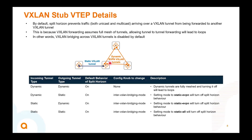There is a knob to change that, applicable only between static and dynamic tunnels. Dynamic to dynamic cannot be allowed because full mesh is still required and turning it off will lead to loops. Between dynamic-to-static or static-to-dynamic, there is a knob under interface VXLAN. In the inter-VXLAN bridging mode, set it to static-eVPN to turn off split horizon behavior. When you do that, static to dynamic will be allowed, and traffic coming in from the dynamic will be forwarded out to the static.